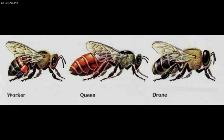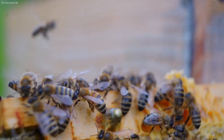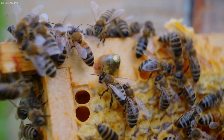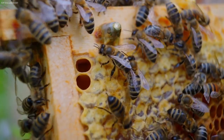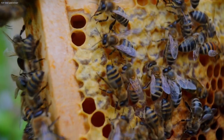Three kinds of bees make up a honeybee colony. The colony consists of thousands of workers, one queen, and a few hundred drones. Workers store nectar and pollen in some cells of the honeycomb. Other cells hold eggs and developing bees. One square inch of honeycomb has about 25 cells.